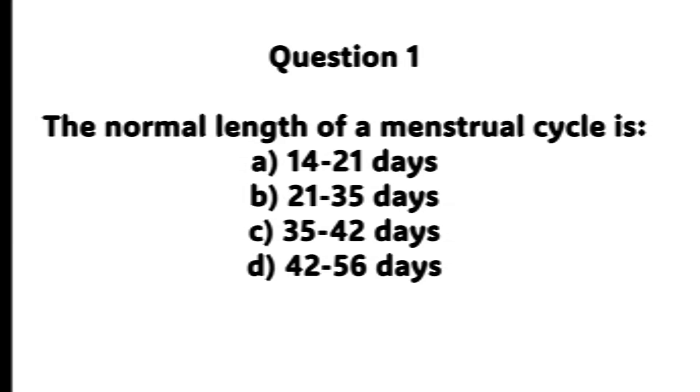Question number 1. The normal length of a menstrual cycle is? The right option is B, 21 to 35 days.